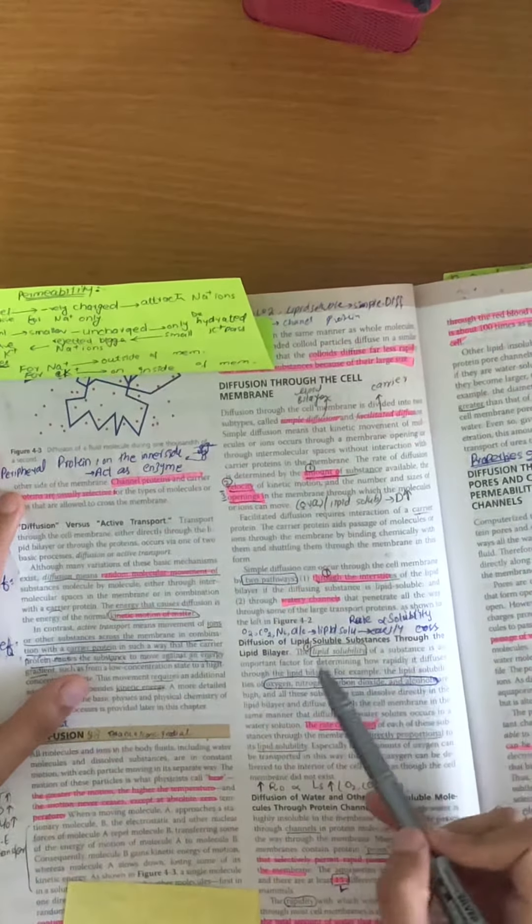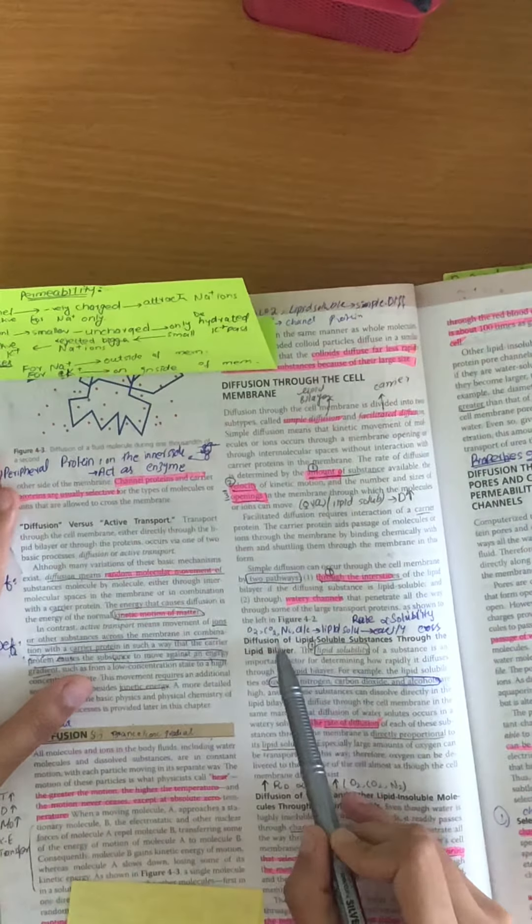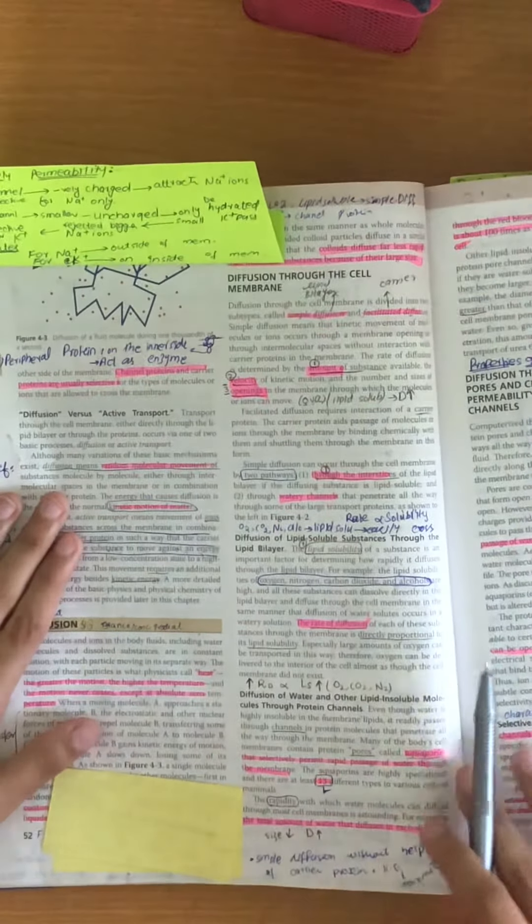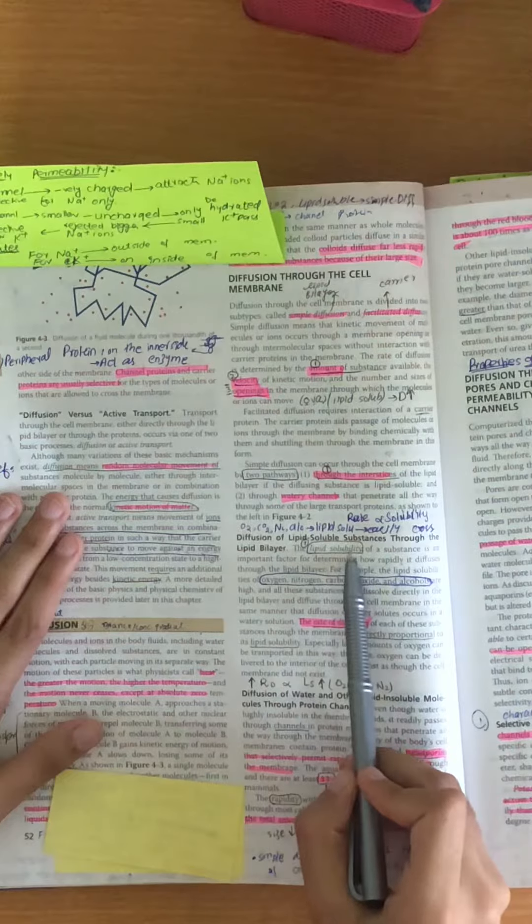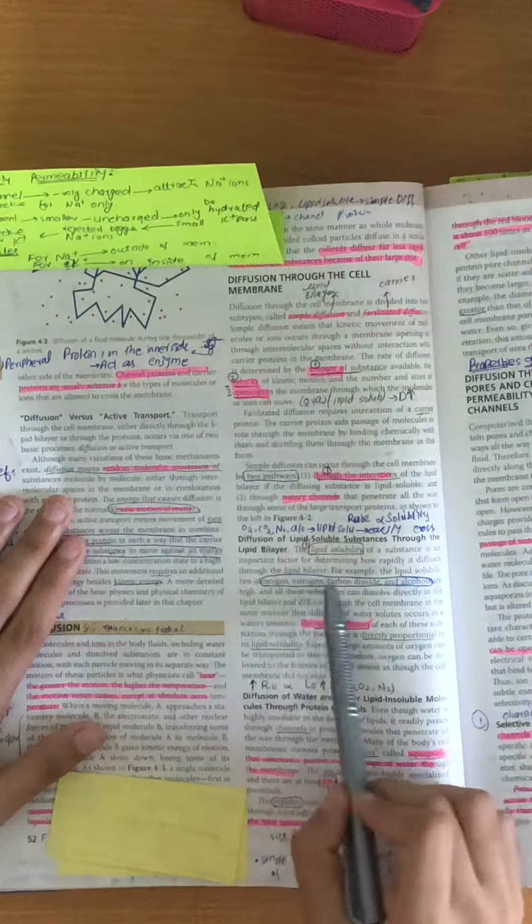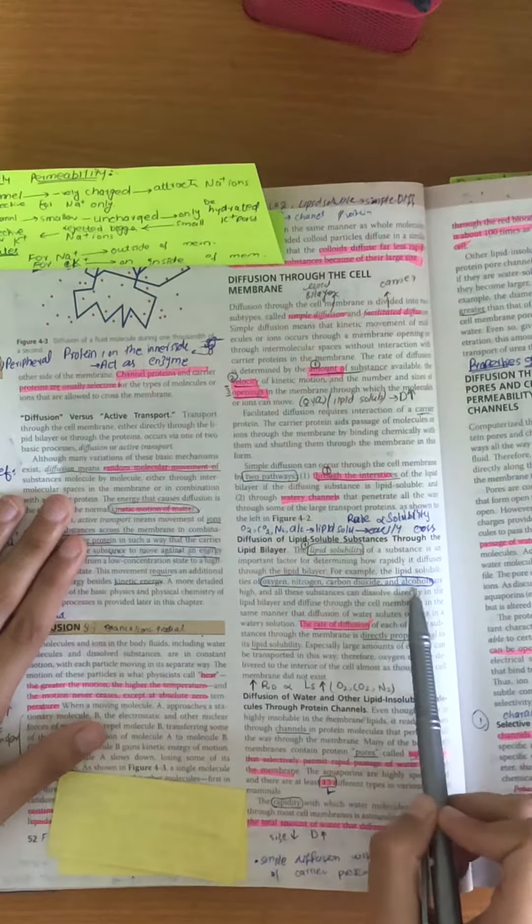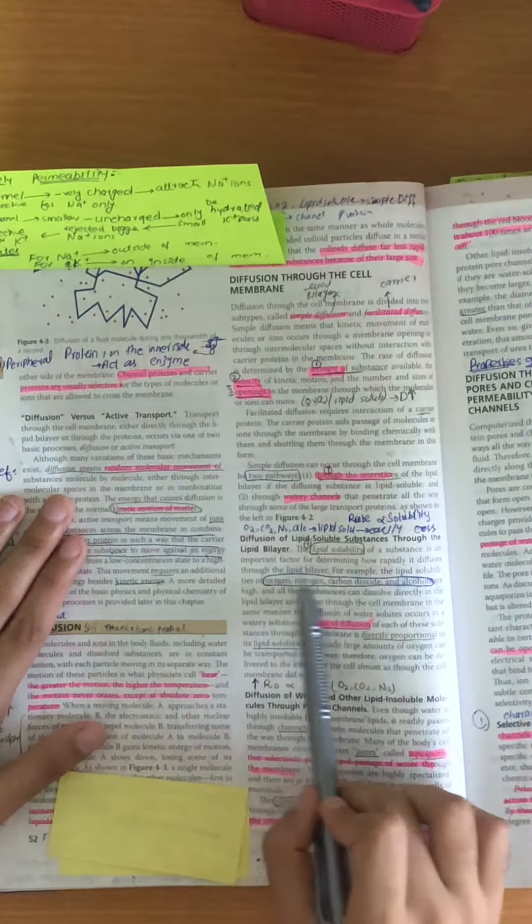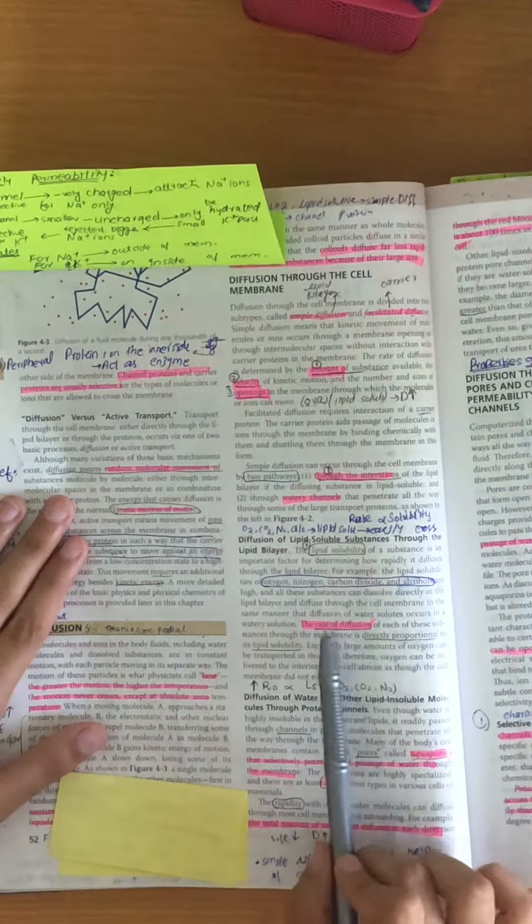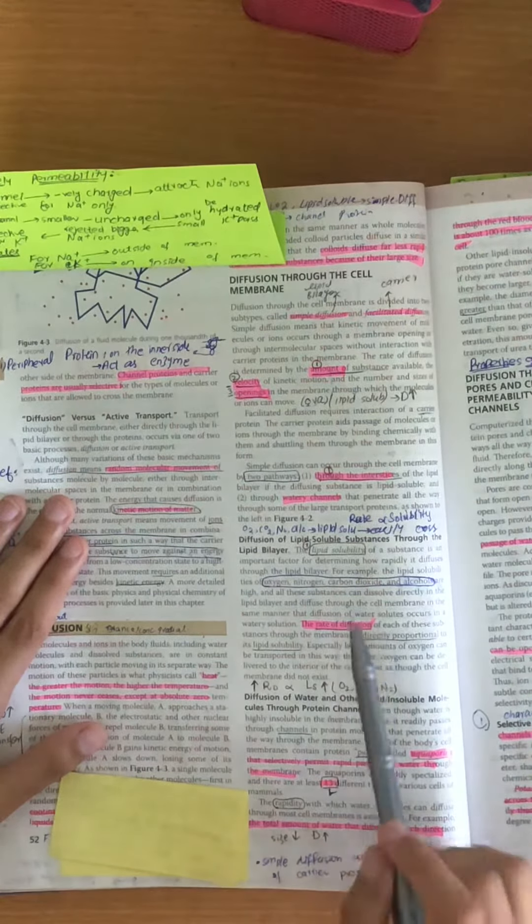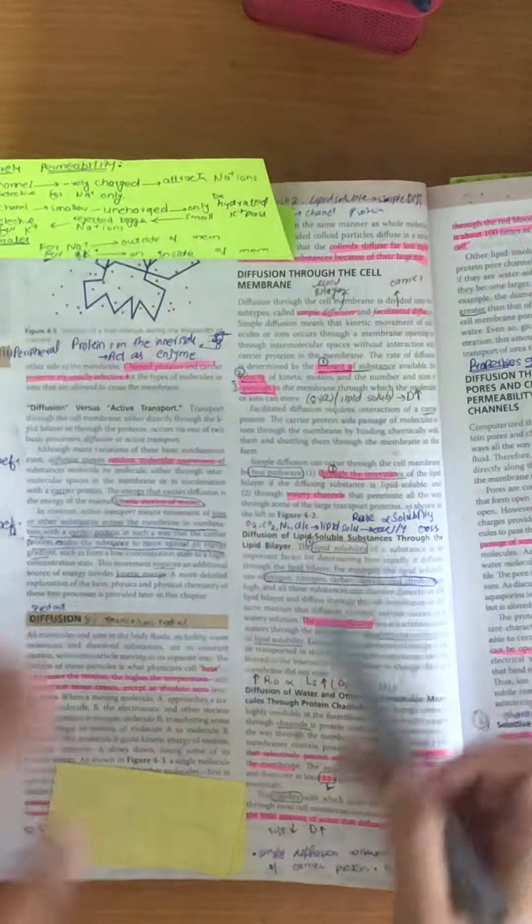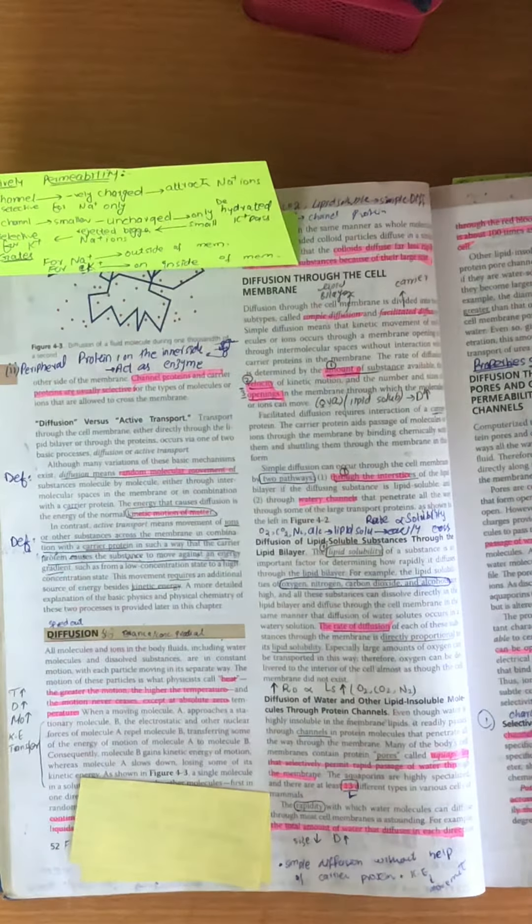Here we are told that lipid-soluble substances will diffuse differently. We know that lipid-soluble substances include oxygen, nitrogen, carbon dioxide, and alcohol. This is very important. These lipid-soluble substances can easily pass through the lipid bilayer and are easily permeable.